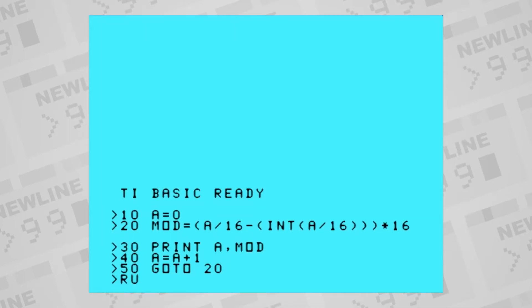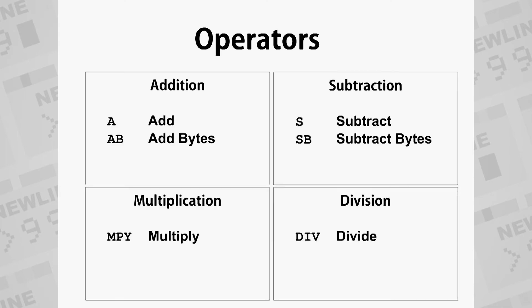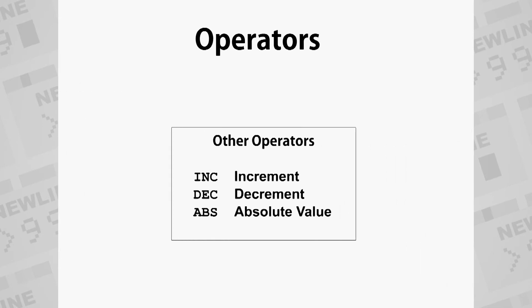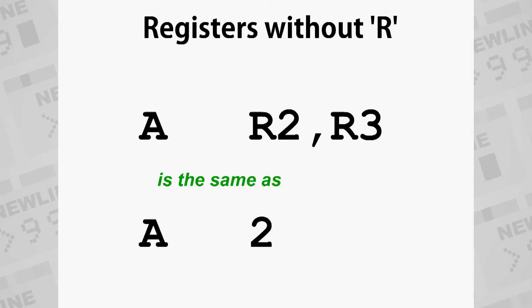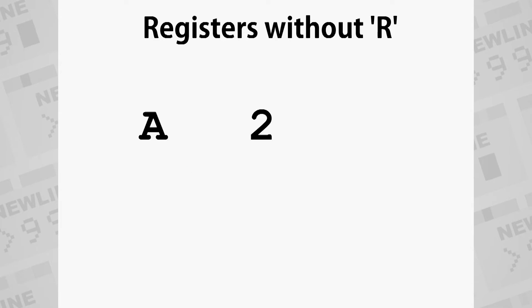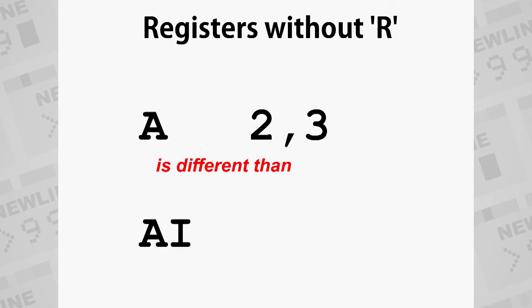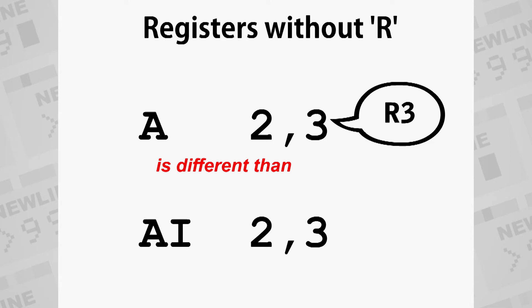It's interesting to note that BASIC does not have a built-in modulo function. Of these four operations in assembly, addition is the only one that has the ability to use an immediate value, by using the add immediate AI operation. There are also increment, decrement, and absolute value operators, which each only take one operand. Be cautious that the editor assembler lets you refer to registers in math operations without the R indicator — that means R2 comma R3 is the same as 2 comma 3. It saves space but makes it easier to misread. Instruction A space 2 comma 3 is different than AI space 2 comma 3, because A will use register 3, but AI will use immediate value 3. Read and write your code very carefully.